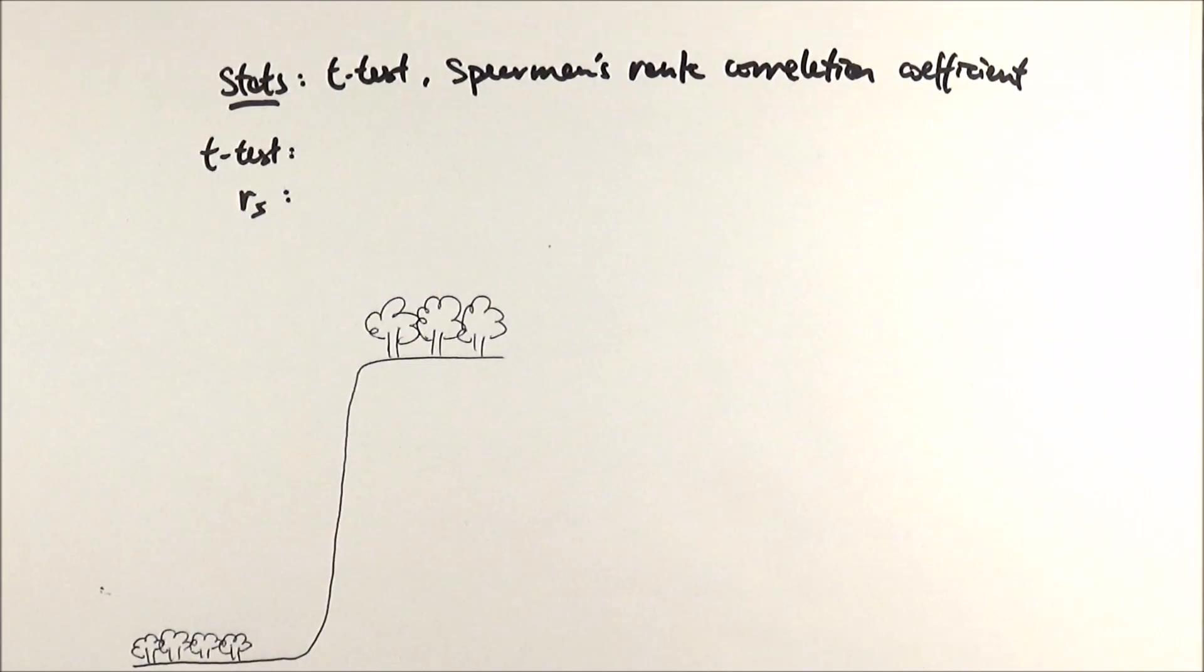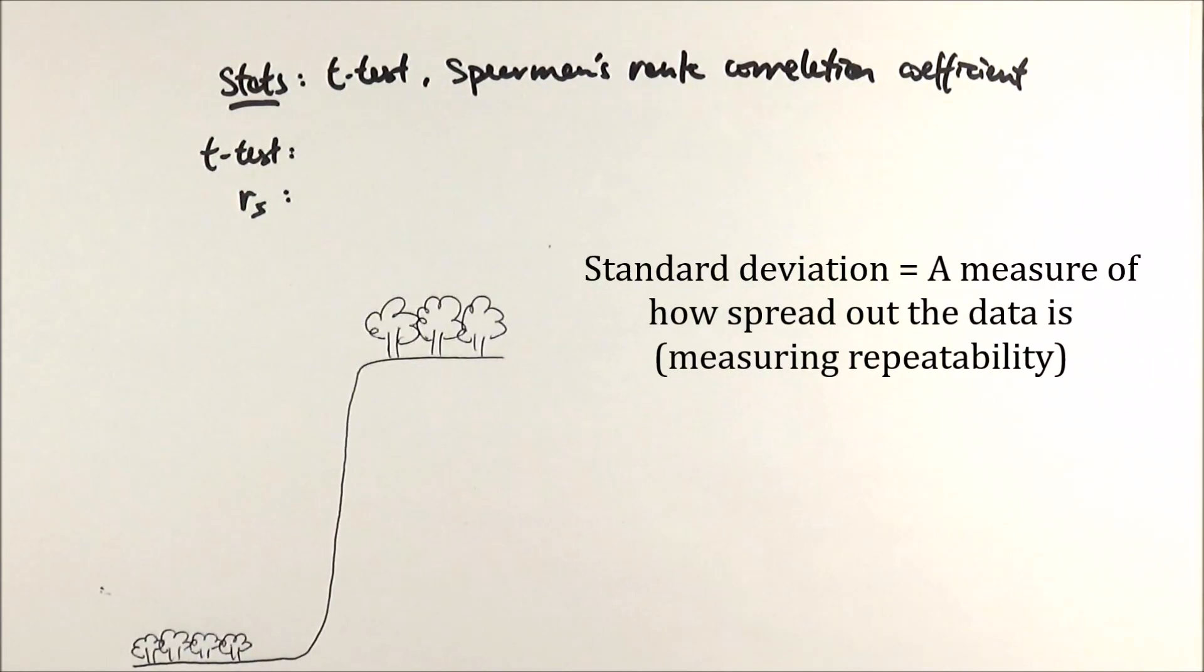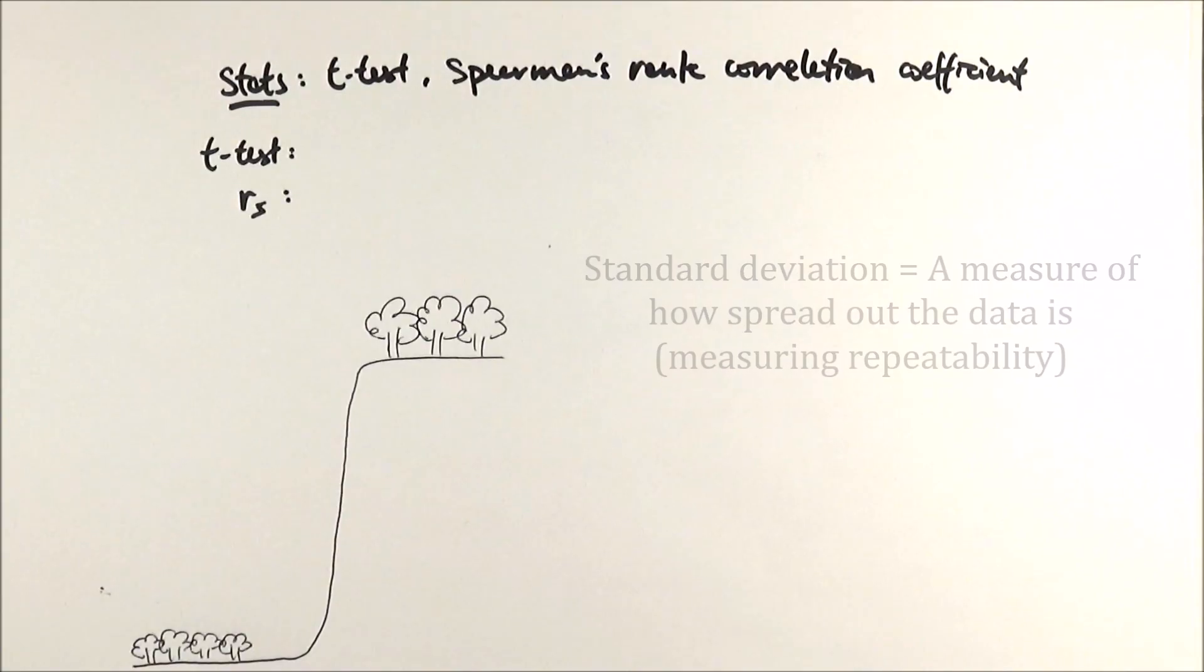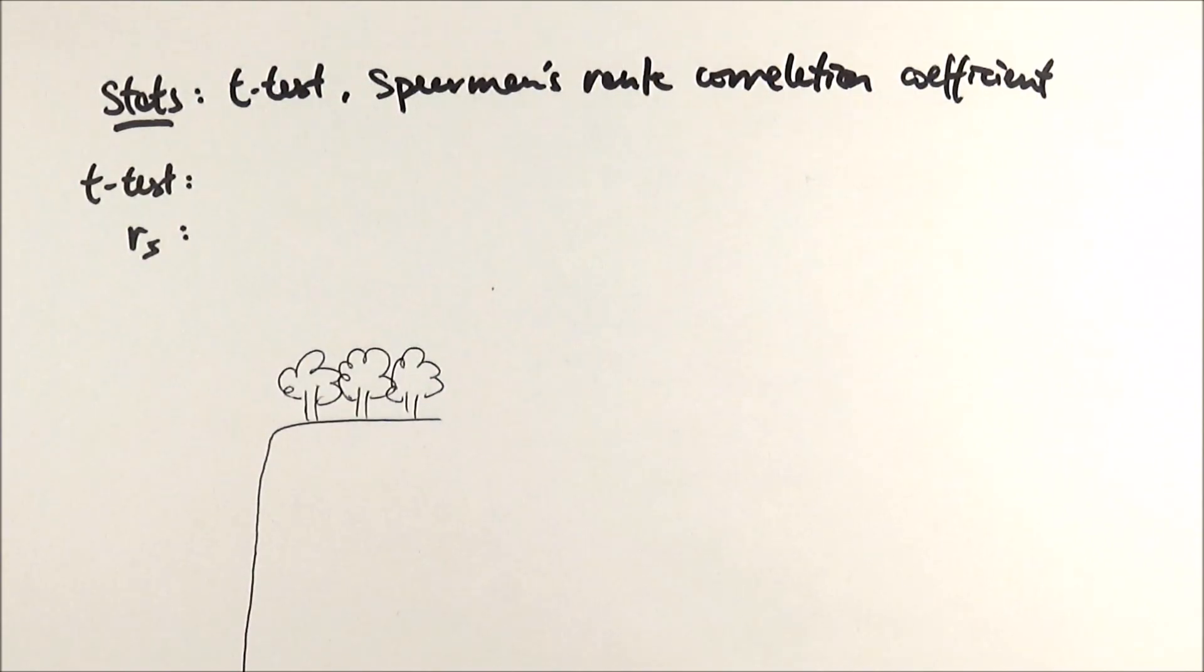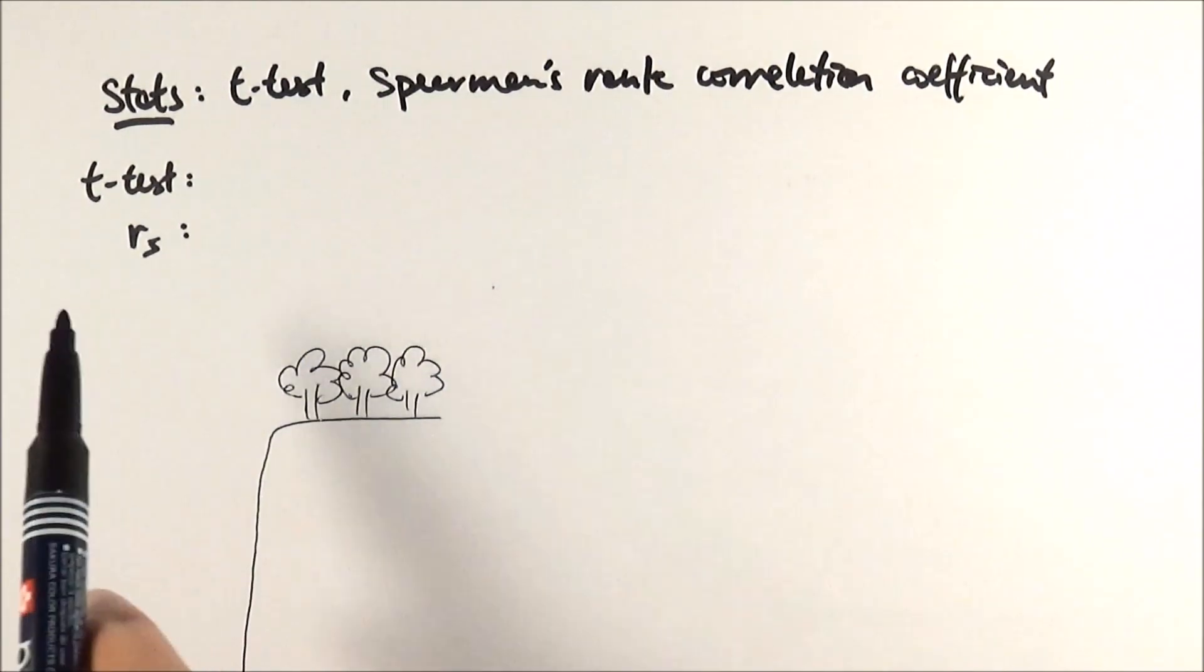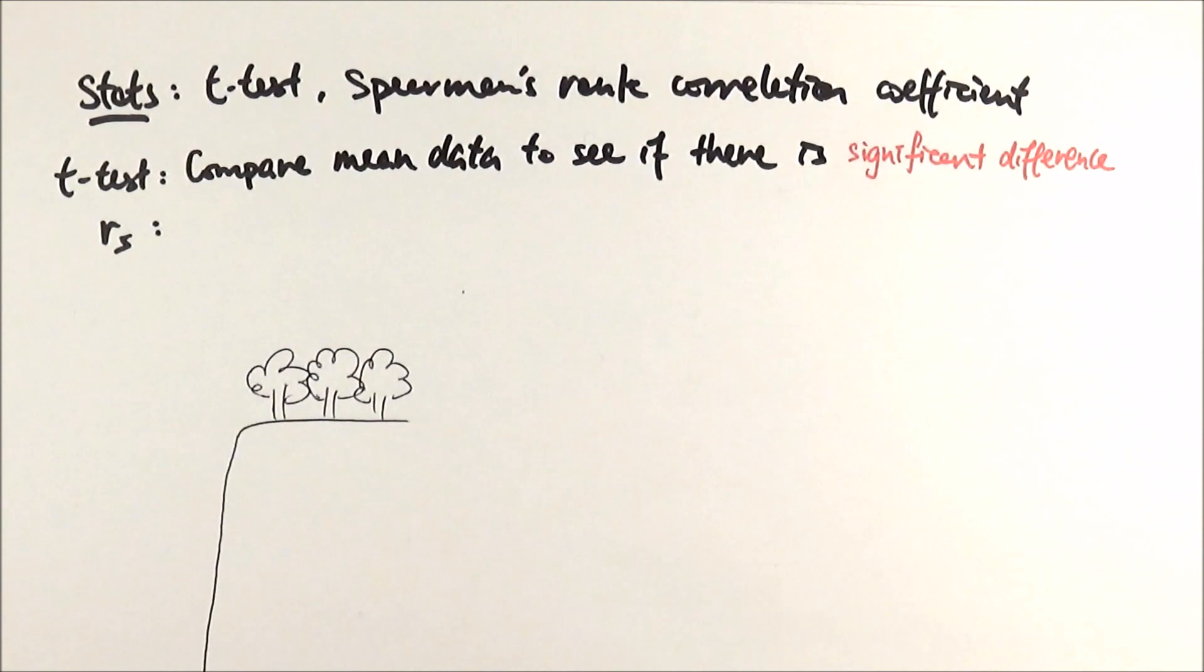They both require a deviation which shows the spread of data points within a set of data. However, here I'm not going to talk about that but mostly focus on how we actually use these stats to prove a point. Before we start, we need to know what these tests are for. T-test is where we compare the means of two sets of data to see if there is significant difference.